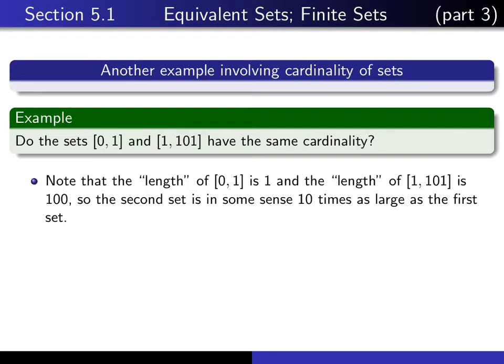Cardinality is one way to compare the size of two sets. It compares them by trying to establish a one-to-one correspondence between the elements of the sets. But we can also measure the size of these sets by their length. The length of this set is 1, and the length of this set is 100. So in some sense this set is 100 times the size of this set.